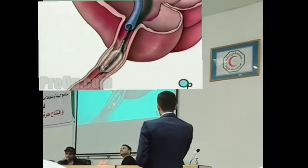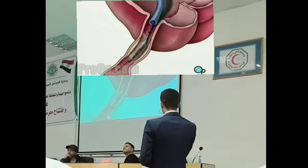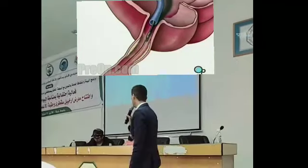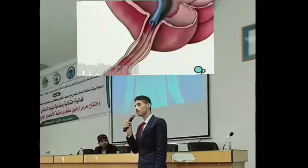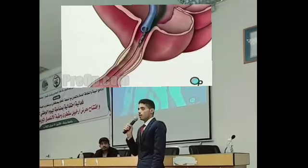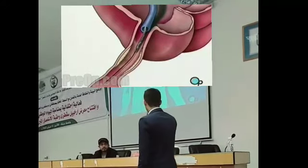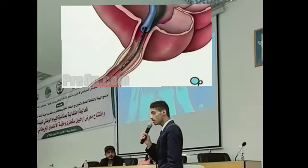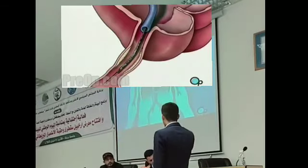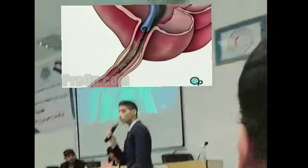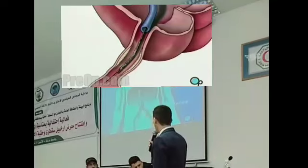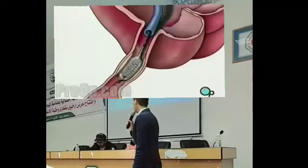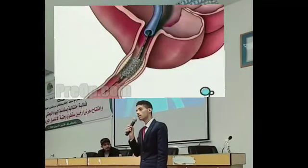After that, the catheter will be deflated and withdrawn. Another balloon is inserted to the middle of the narrow part of the artery and the balloon will be inflated and the stent will expand and support the coronary artery. Once the stent is inserted, it will remain there for life to support the coronary artery and restore blood flow.